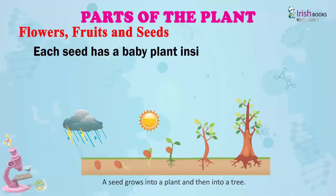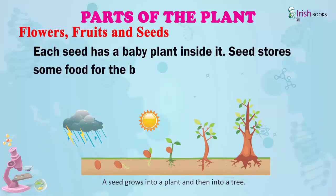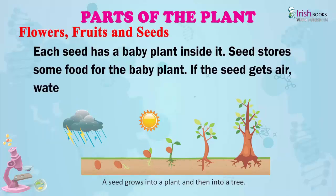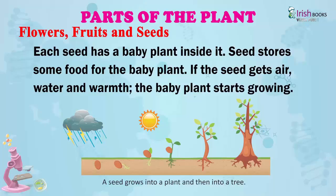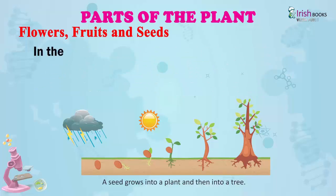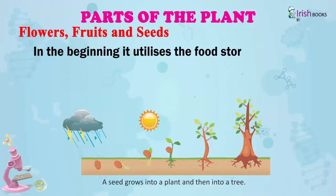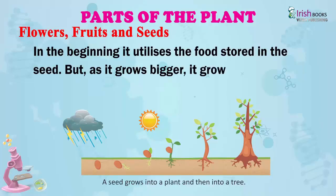Each seed has a baby plant inside it. The seed stores some food for the baby plant. If the seed gets air, water and warmth, the baby plant starts growing. In the beginning it utilizes the food stored in the seed. But as it grows bigger, it grows its own leaves which make food for the whole plant.